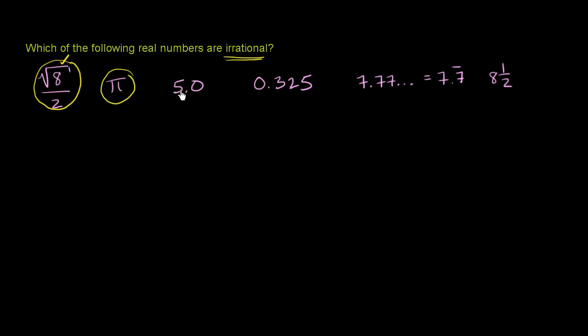5.0. Well, I can represent 5.0 as 5 over 1. So 5.0 is rational. It is not irrational.